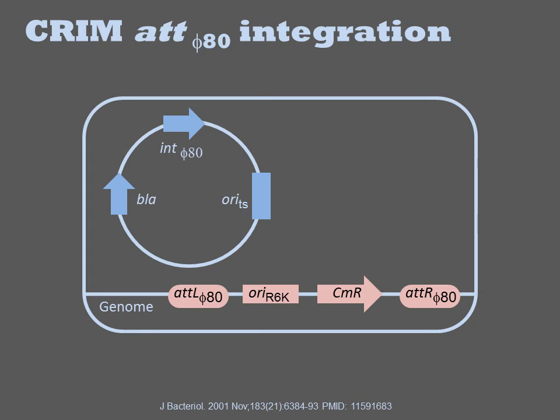Integrase from the helper plasmid catalyzes the single crossover recombination of the CRIM plasmid into the att-B site of the genome. Now that it is in the genome, it will replicate with the rest of the genome. The CMR gene confers chloramphenicol resistance to the cell, allowing the selection of integrants on antibiotic-containing medium.